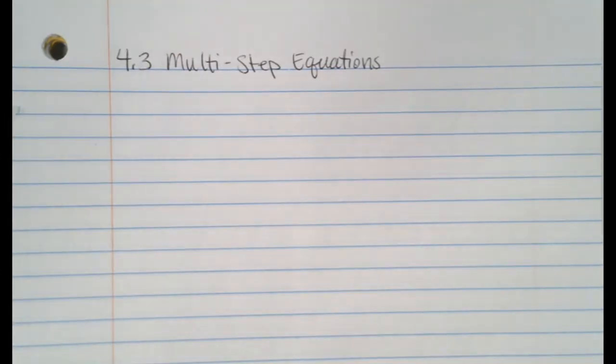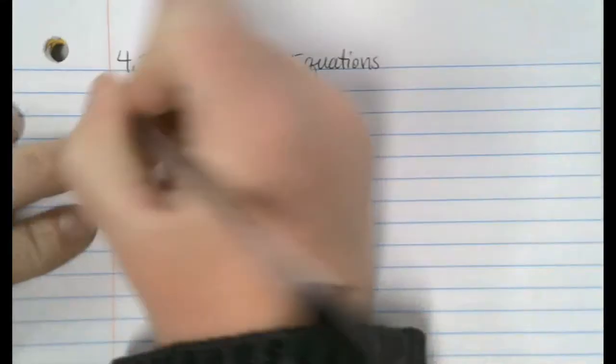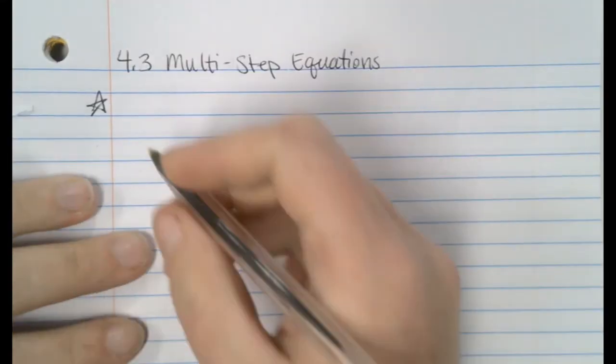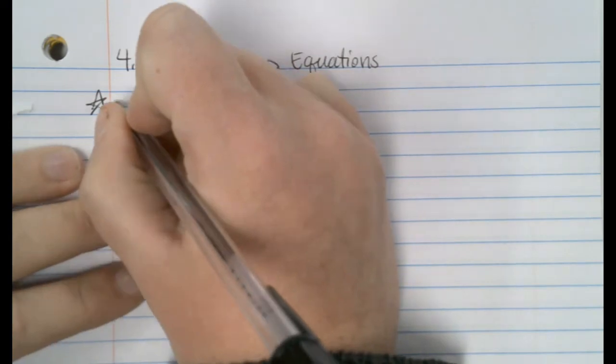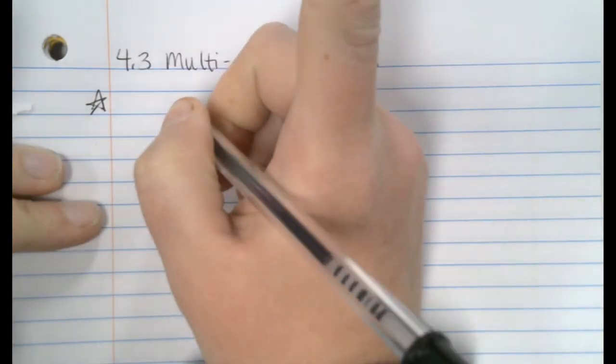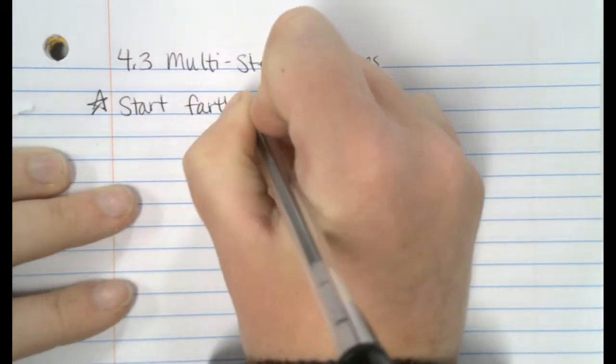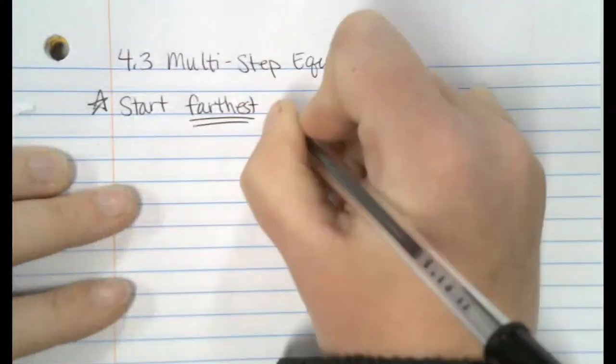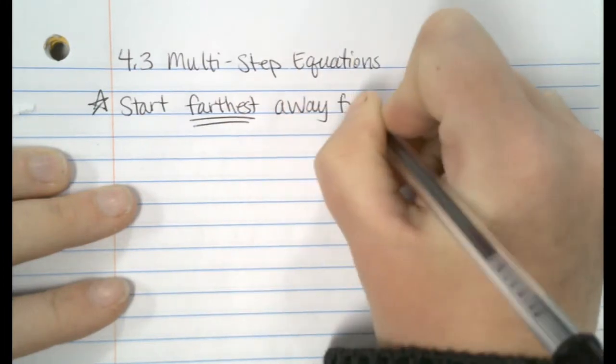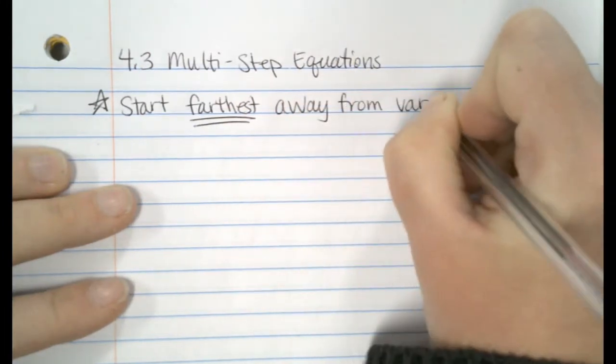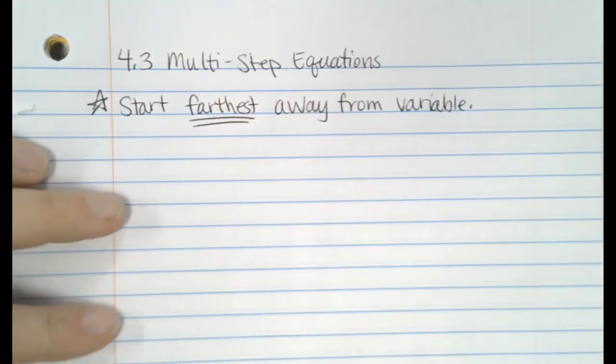Over there on the board where we have our process, the process is the exact same. So the good news is it doesn't change. And most of you guys will probably not even think this is much harder than what we've been doing. The key, as it has been and still is, is where do you start farthest away from the variable? That's really the only way you can mess up, is if you start in the wrong spot.